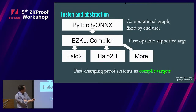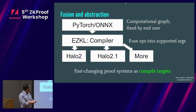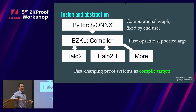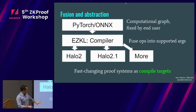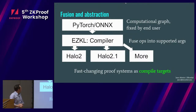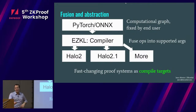We're targeting people from the Python ecosystem. We have a computational graph fixed by the end user, baked into PyTorch or ONNX. Our compiler, called Ezekiel, fuses operations and writes them into a proof system, which we think of as a compile target. There's now a proof system coming out approximately every week — it's been a stressful fall trying to decide what to invest in next. We've spent a lot of time on Halo 2, but if anyone has opinions or would like to collaborate on integrating their proof system, please talk to me. Proof systems are like hardware architectures. This approach lets us handle the chaos of the next five years and let end users literally use the same file they made three years ago.